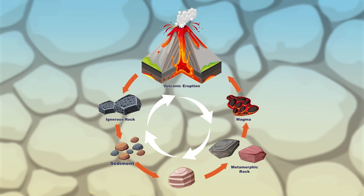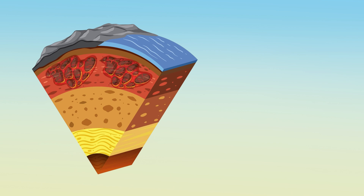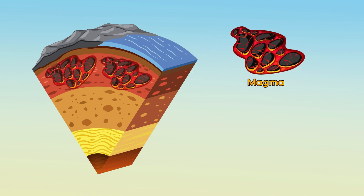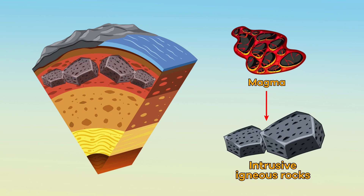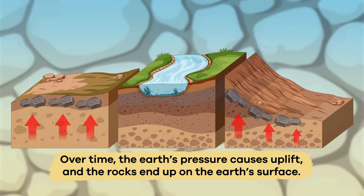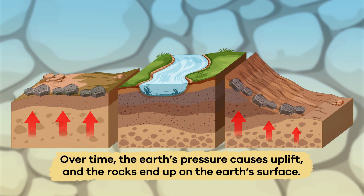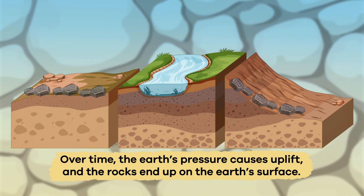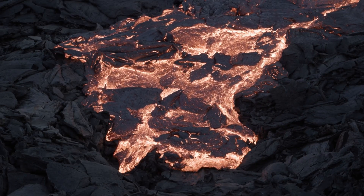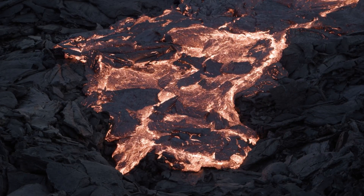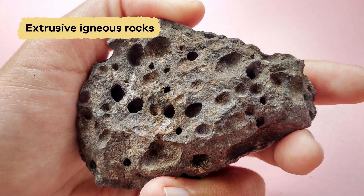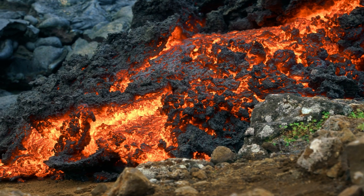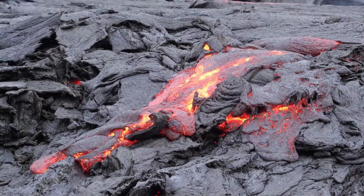Let's dig in to the steps of the rock cycle. Step 1: Magma cools and crystallizes beneath the Earth's crust, forming intrusive igneous rocks. Over time, the Earth's pressure causes uplift and the rocks end up on the Earth's surface. Step 2: Molten magma flows to the surface of the Earth as lava through volcanic activity, causing extrusive igneous rocks to form as the lava hardens and crystallizes.